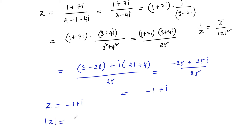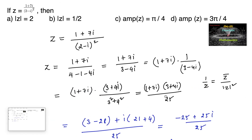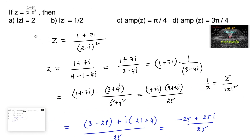Modulus of z is equal to the square root of (-1)² + 1², which is equal to √2. Among the options, mod z is given as 2 or mod z equals 1/2, so both are wrong.